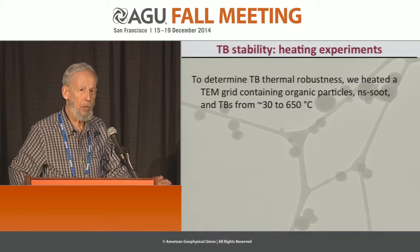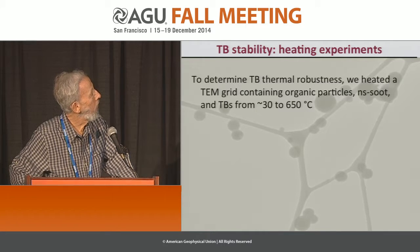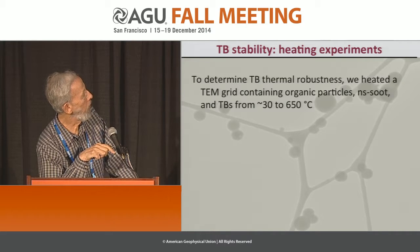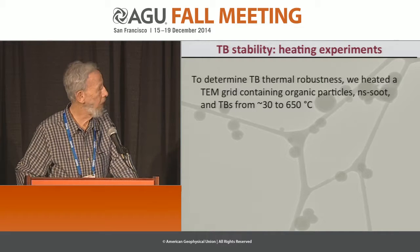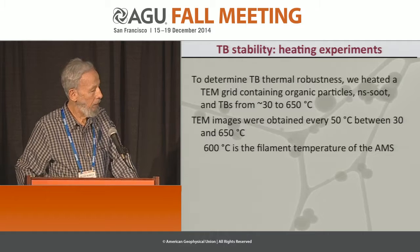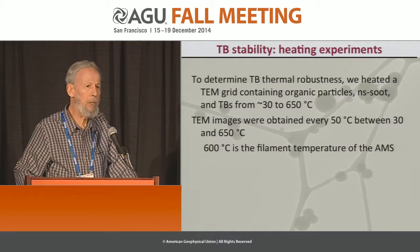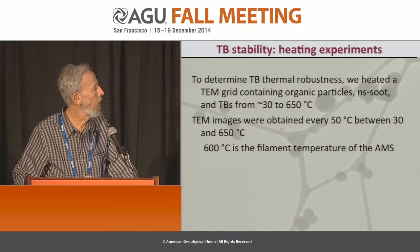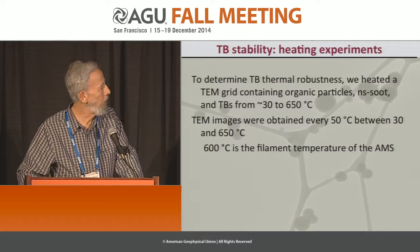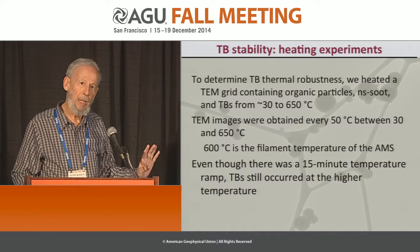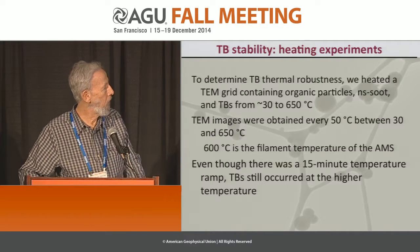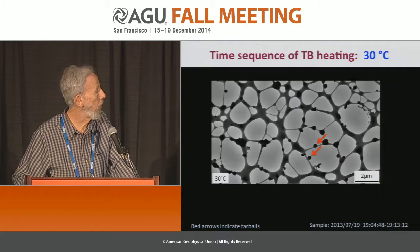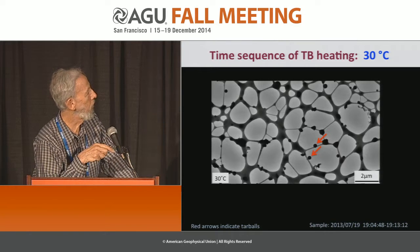I want to describe very preliminary results of heating experiments. We decided to take a sample and determine its thermal robustness. We heated a TEM grid containing a mixture of materials from about 30 degrees to 650 degrees Celsius, obtaining images at roughly 50-degree intervals. The important point is that 600°C is the filament temperature of the AMS — so we're interrogating what the AMS will or perhaps won't see. There was about a 15-minute temperature ramp, and I'm going to show you a series of images just as I did with the Colocum fire.